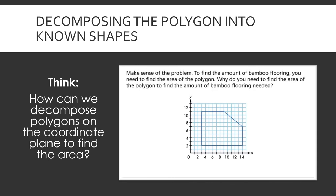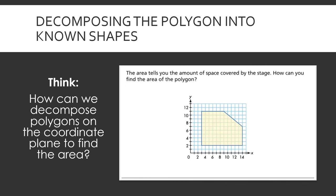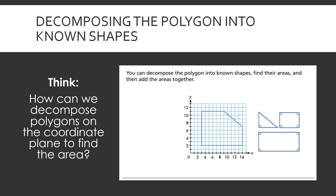Make sense of the problem. To find the amount of bamboo flooring, you need to find the area of the polygon. Why do you need to find the area of the polygon to find the amount of bamboo flooring needed? The area tells you the amount of space covered by the stage. How can you find the area of the polygon? You can decompose the polygon into known shapes, find their areas and then add the areas together. Think about the area formulas you know.